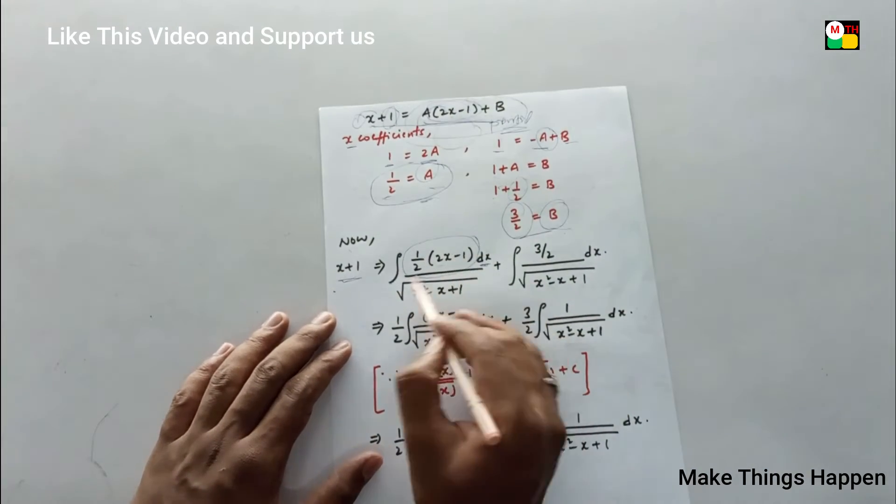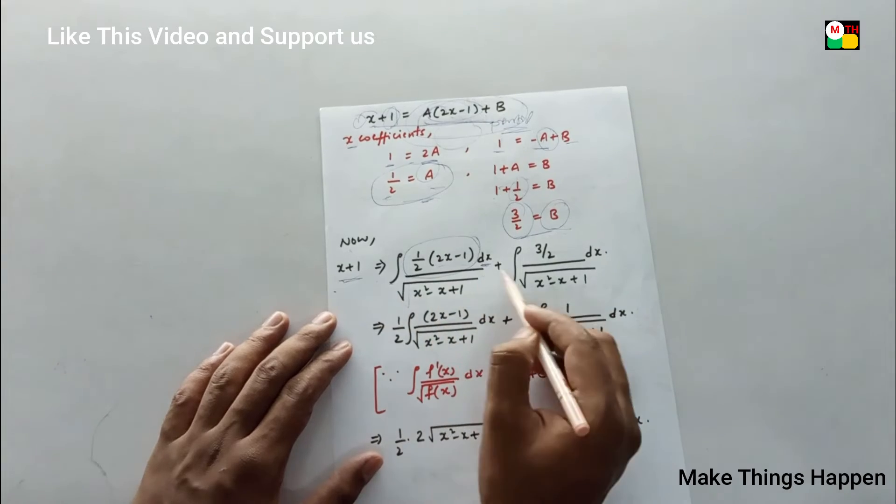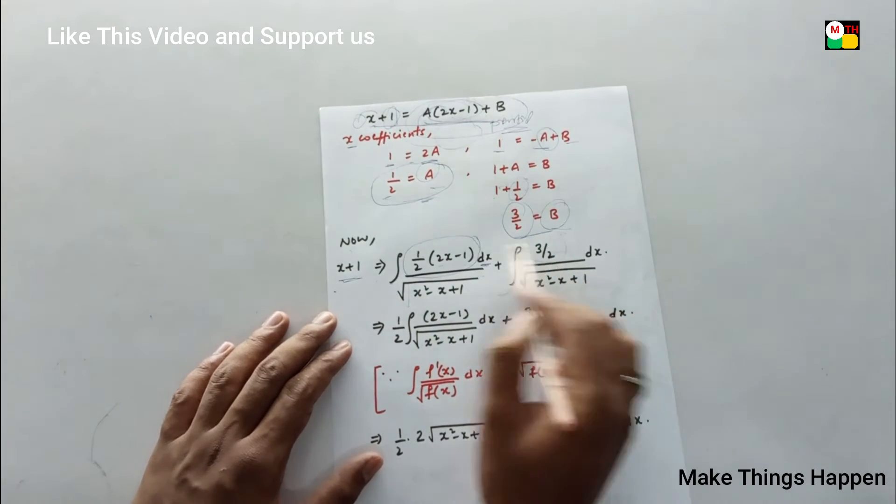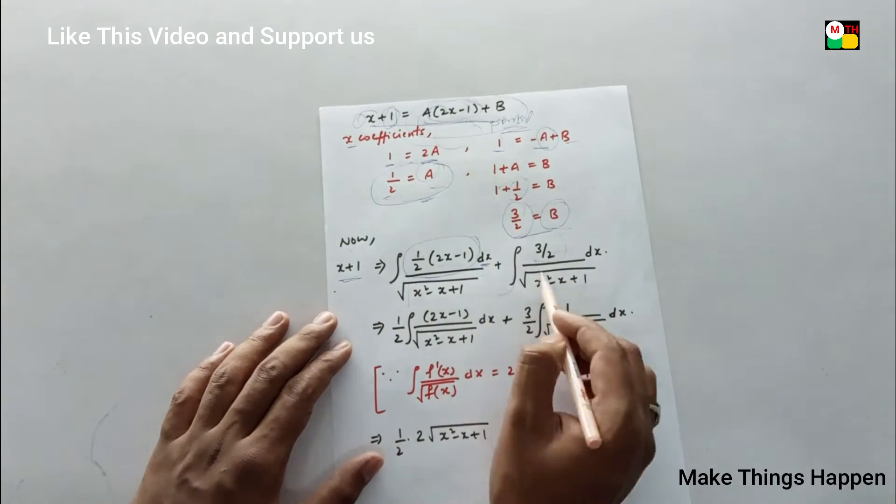So: (1/2) · ∫ (2x - 1) / √(x² - x + 1) dx, plus ∫ B / √(x² - x + 1) dx.